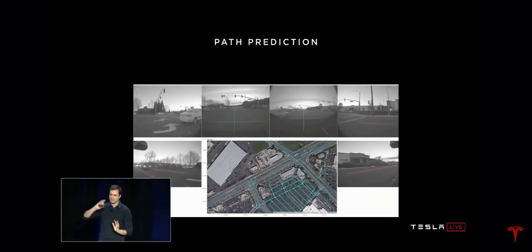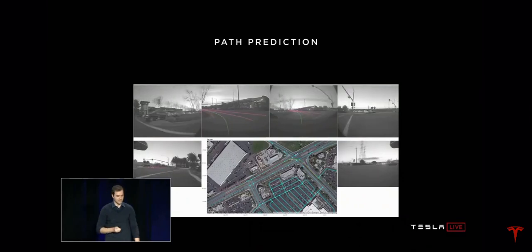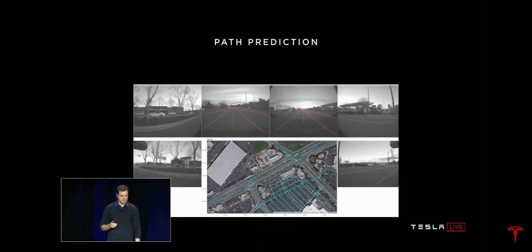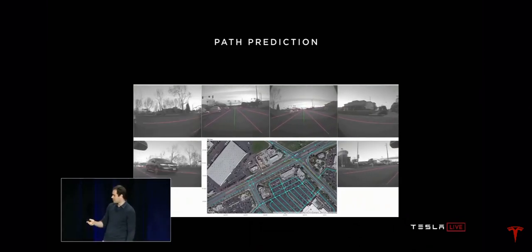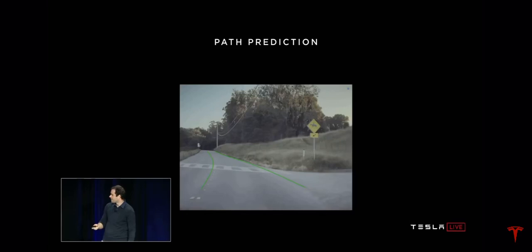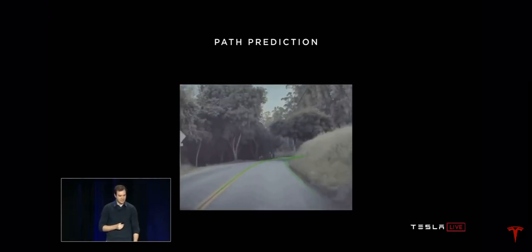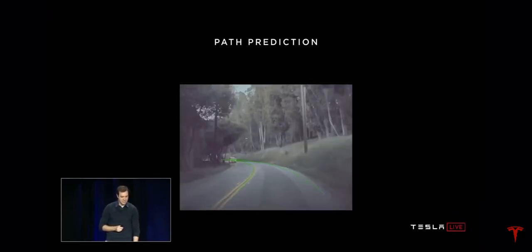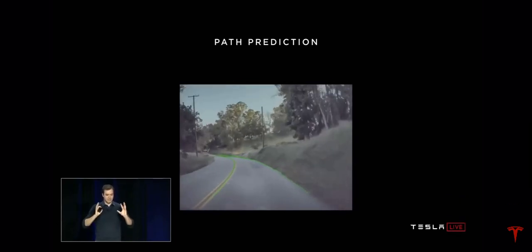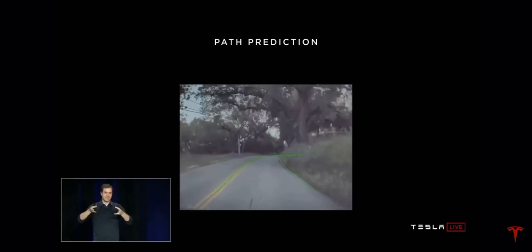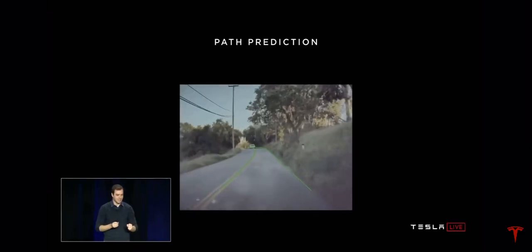We can also apply the same data engine to all of this and make it work over time. Here's an example of path prediction going through a complicated environment. What you're seeing here is a video, and we are overlaying the predictions of the network — the path the network would follow is shown in green.